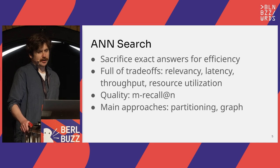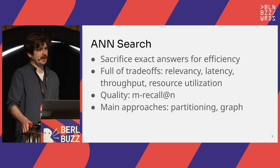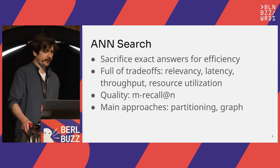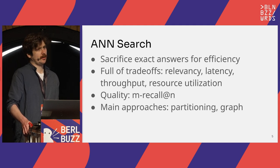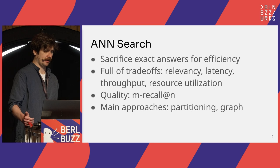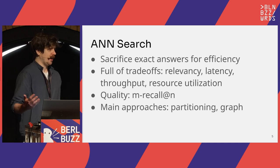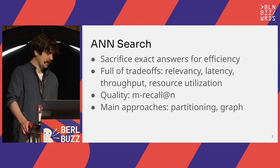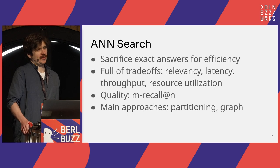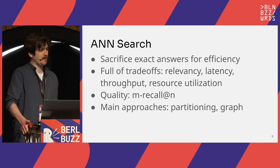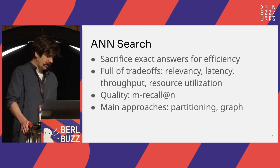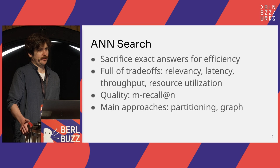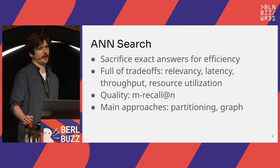ANN sacrifices exact answers for efficiency at insert and query time. It's rich with tradeoffs: we can accept worse answers and find them faster, make different compromises on latency for inserts versus search, and consider throughput and resource utilization. When evaluating ANN search systems, the quality metric we typically see is 'm recall at n' — if we retrieve n vectors using ANN search, what proportion of the true m nearest neighbors are contained in that result set.